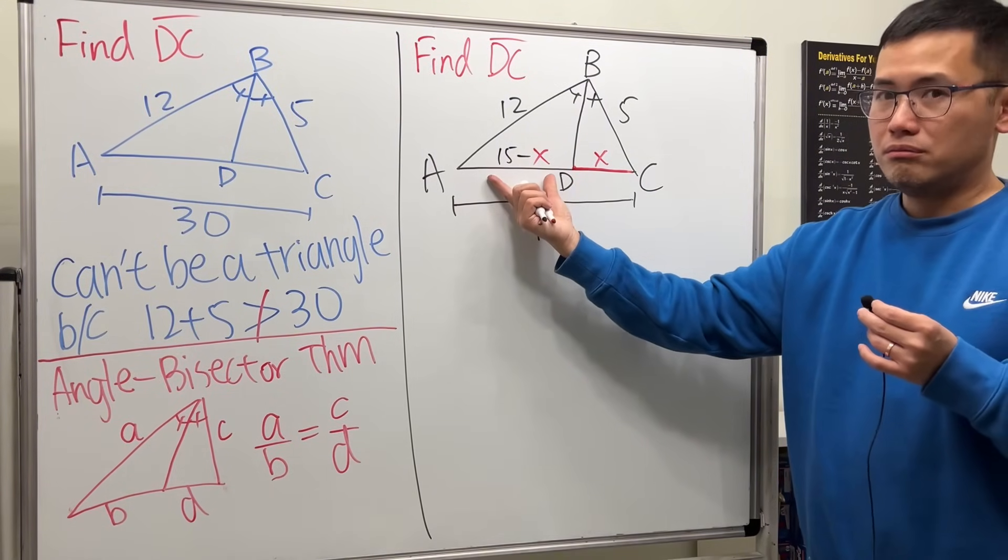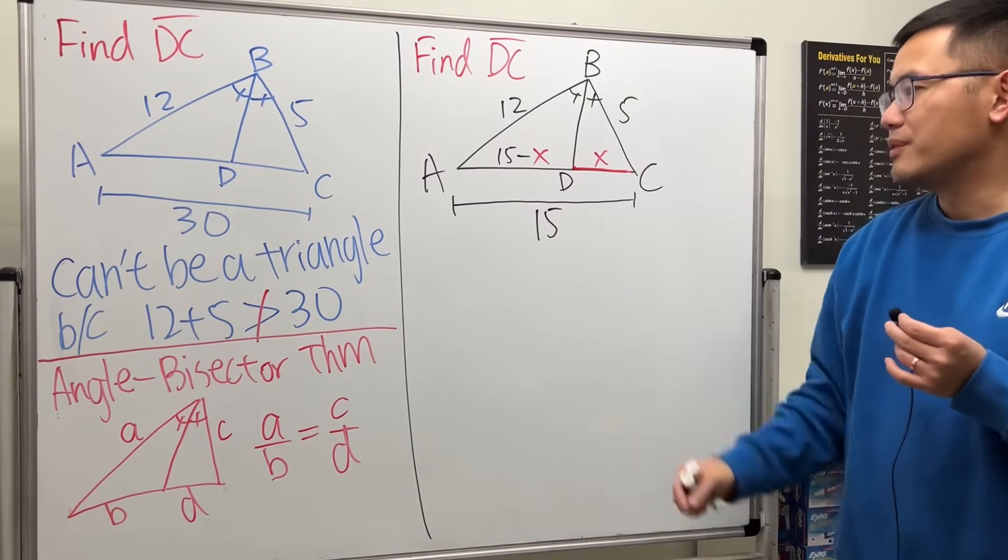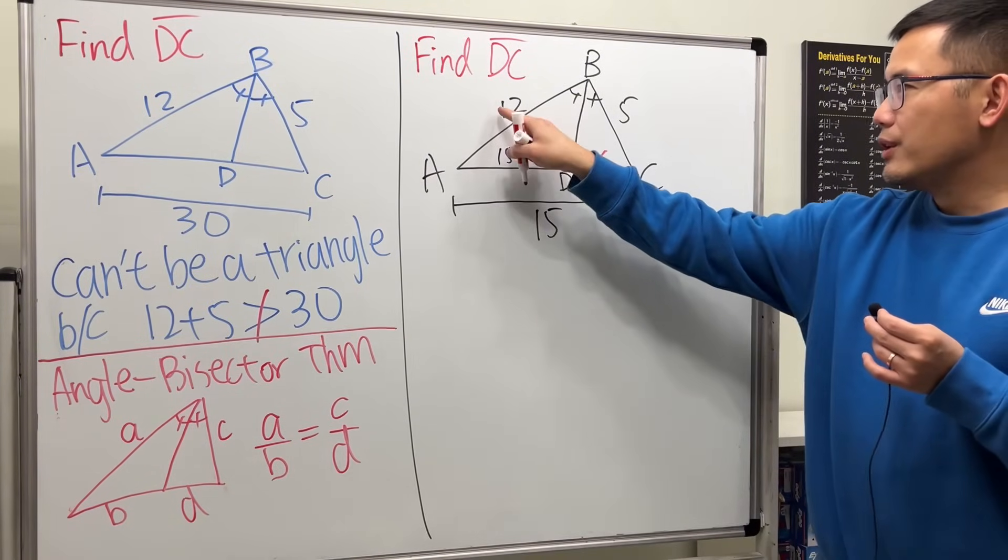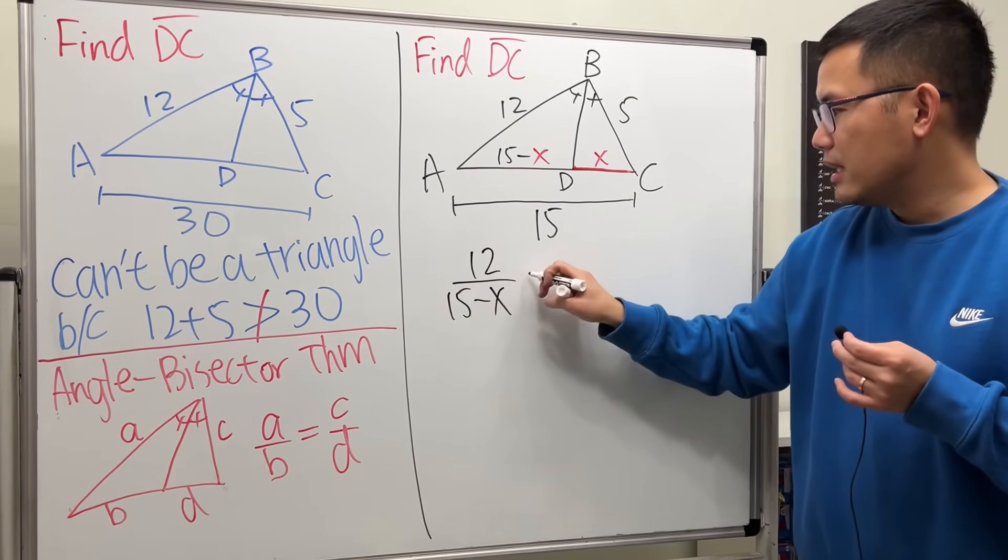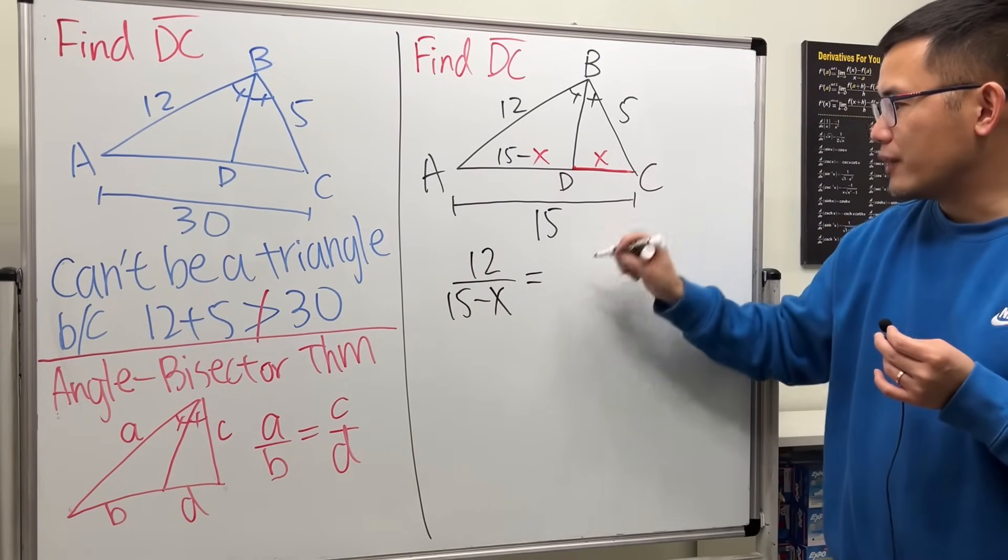Okay, imagine if this is 4, this will be 11 and add up to be 15. So now, 12 over that - so we have 12 over 15 minus x - that has to be equal to 5 over x.